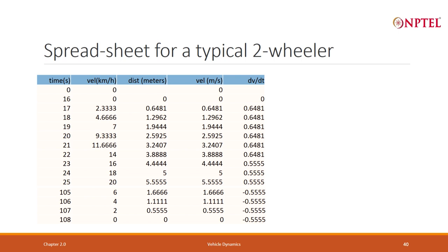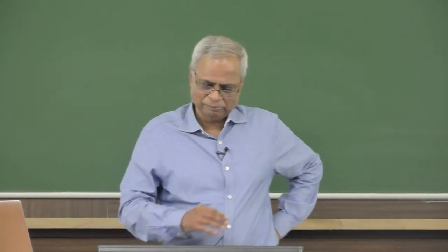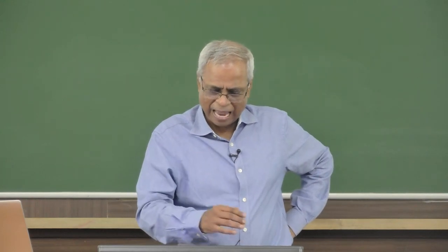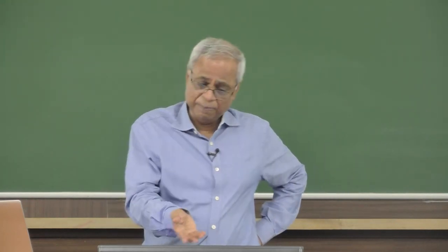So, I start from 0 seconds with velocity 0 km/h. Converting from km/h to m/s by dividing by 3.6 gives 0 m/s. I calculate the acceleration, and from second 16 onward — 17, 18, 19, 20, 21 — my velocity keeps on changing. I take those velocity points and compute the average velocity point.